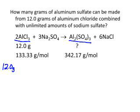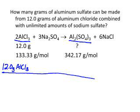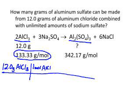I've got 12 grams of aluminum chloride. What I want to do first is go to moles — this is where our molar mass comes into play. For every one mole of aluminum chloride, it has a molar mass of 133.33 grams.